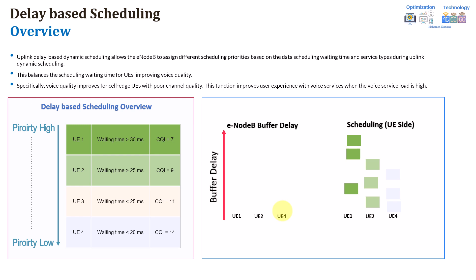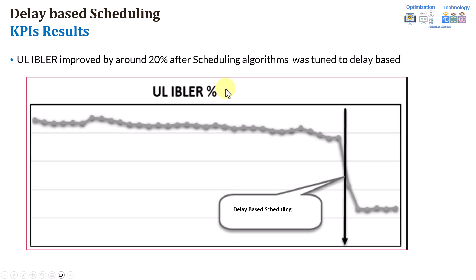For sure, this will be reflected from the KPI point of view — you can see improvement in block error rate, especially in the uplink. And even from a drive test, you can see the voice quality improving a lot. For example, after enabling delay-based scheduling, we have seen more than 20% improvement in the uplink. And also from the drive test at that time, we have seen improvement in the voice quality.